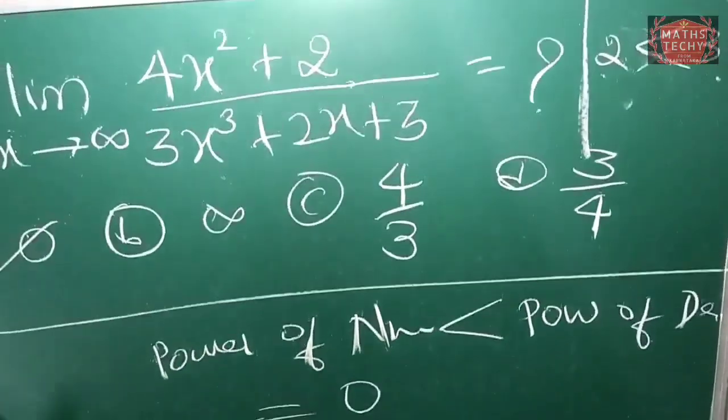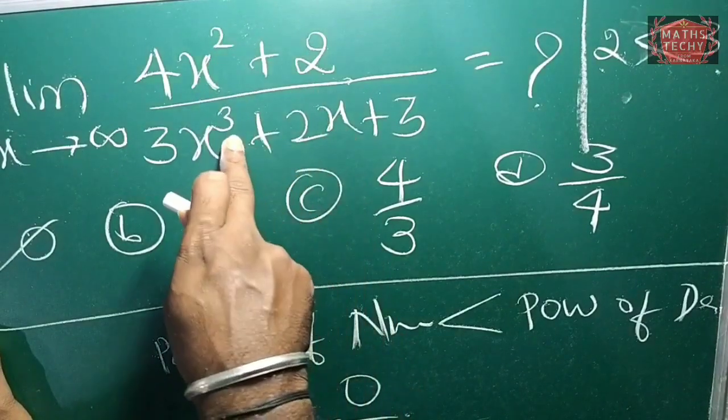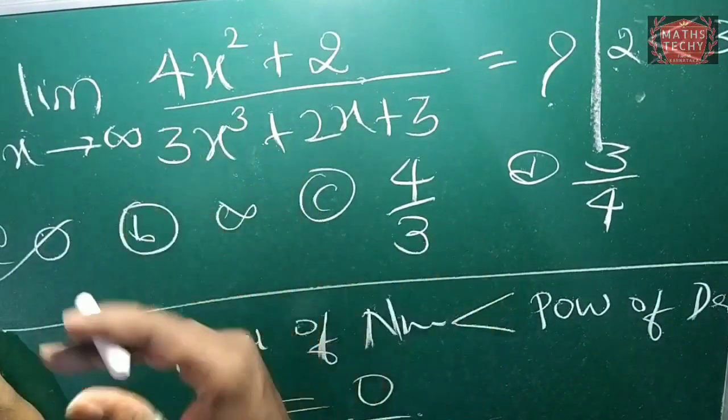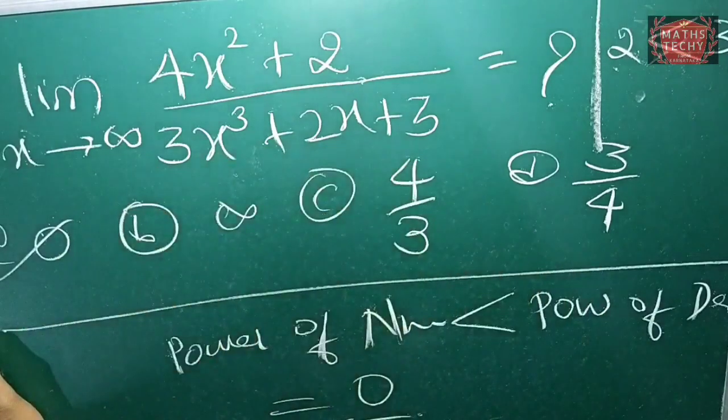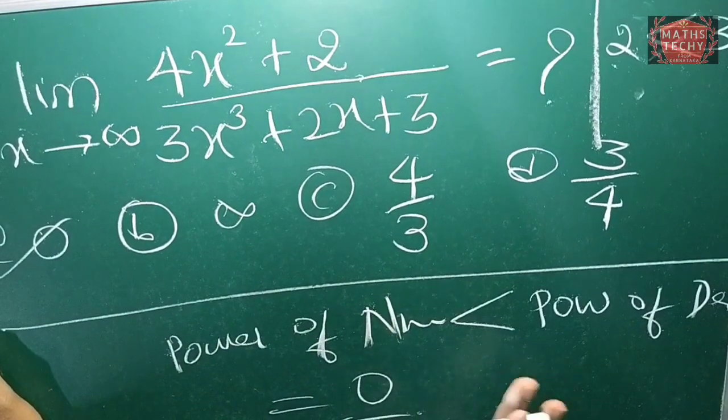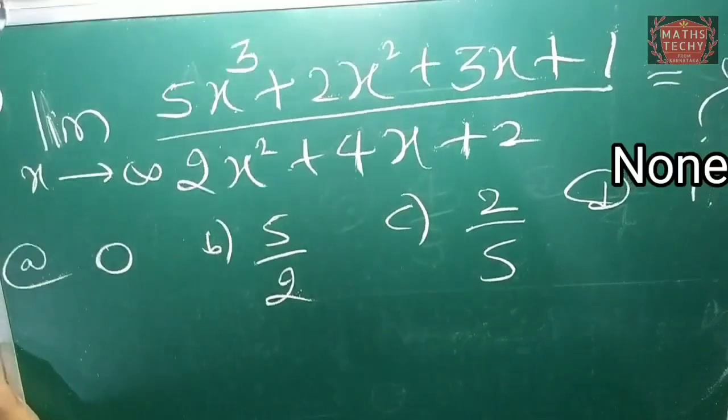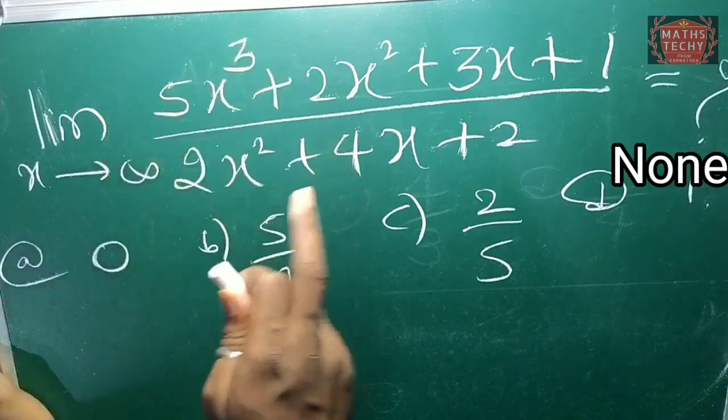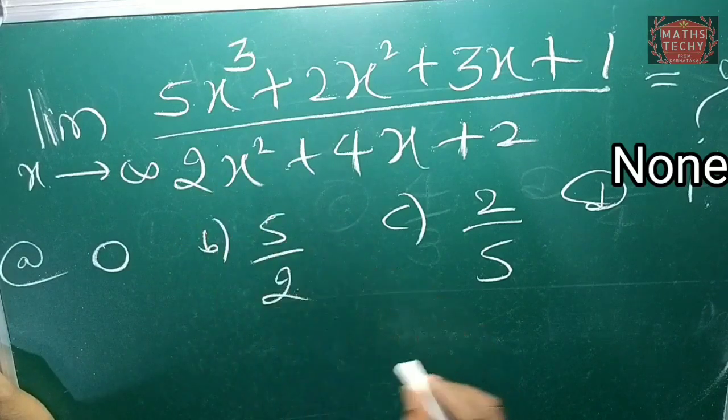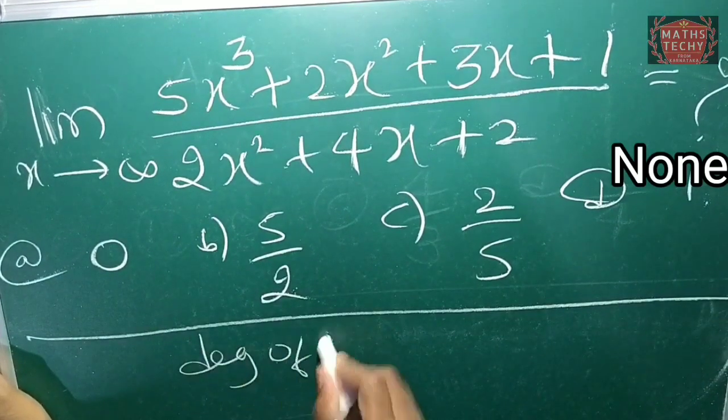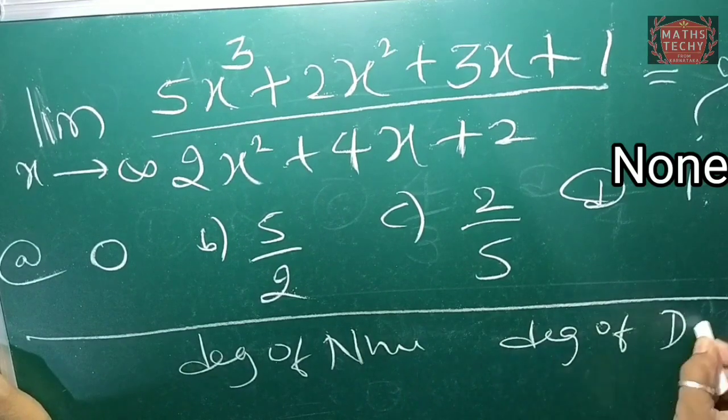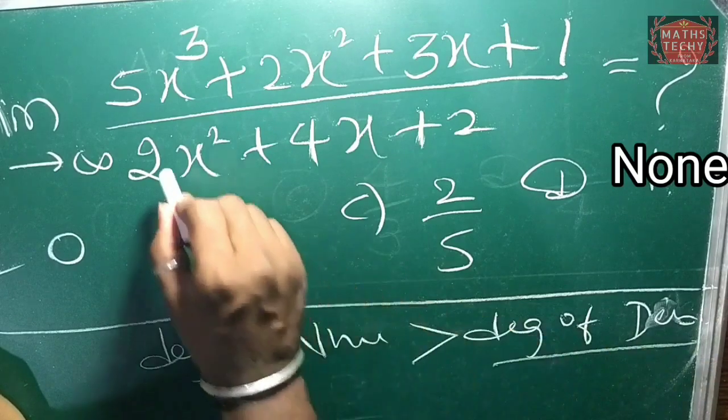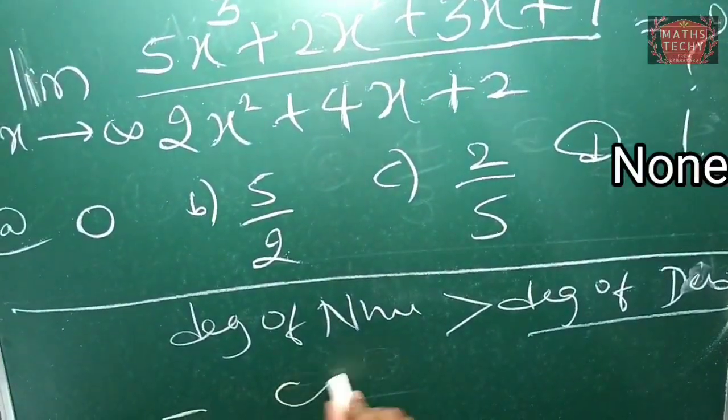The second tip problem. So the numerator degree is 3. But the denominator nearly degree is 2. So the degree of numerator is greater, the degree of denominator is small. So the answer is infinity. When the degree of numerator is greater than the degree of denominator, the answer is infinity.